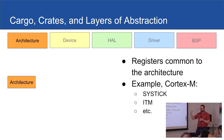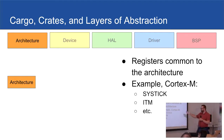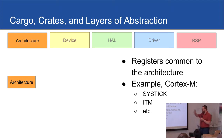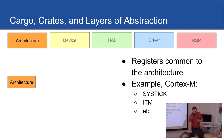The architecture crate is just bindings to registers that are common to a given architecture. For example, with Cortex-M, you've got a lot of common peripherals that are the same across all vendors — SysTick, ITM, NVIC — all your standard stuff is available through an architecture crate. If you had a different architecture, you'd have a different crate providing those peripherals.